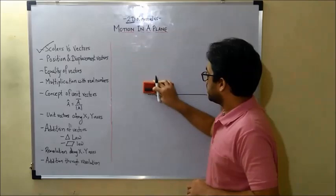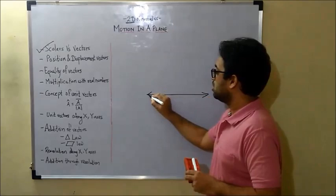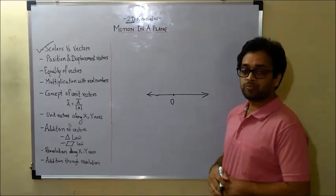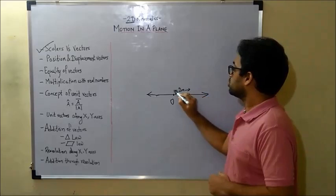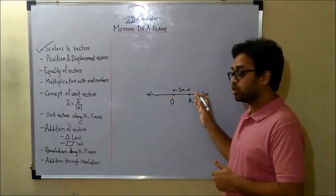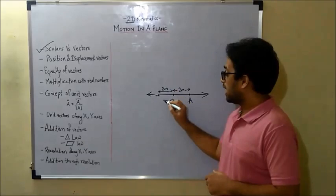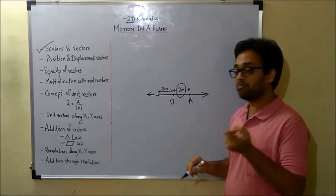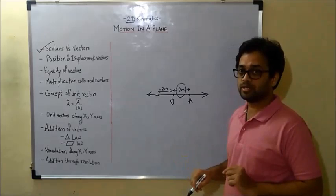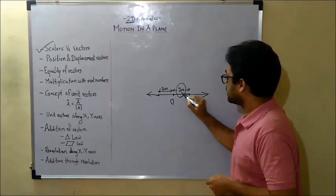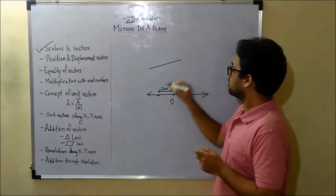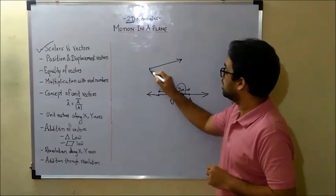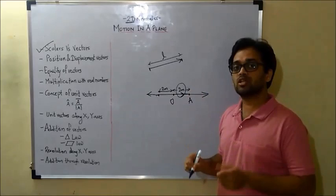Let me constrain the motion to one dimension. Motion will happen in this direction or in this direction. This is my origin, and this is where the particle is. The distance is 2 meters, so I say the position is 2 meters — meaning positive 2 meters. When I say minus 2 meters, only then can the particle lie on the other side. That means position is a vector. For expressing position, we draw a vector like this — a line with an arrowhead. The length of the line denotes the magnitude, and the arrowhead denotes the direction.